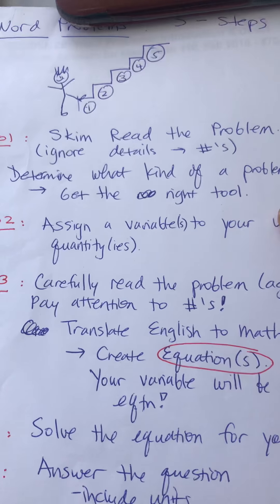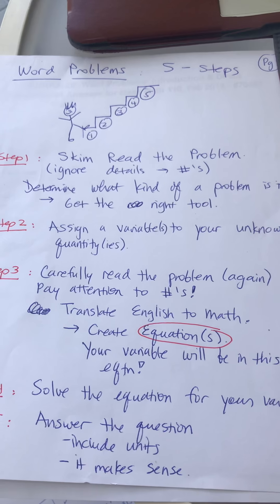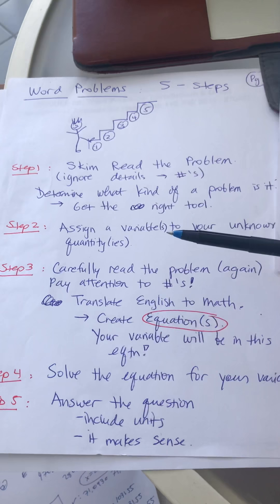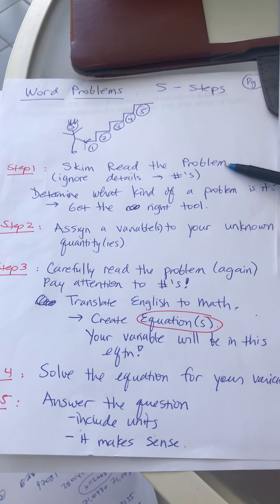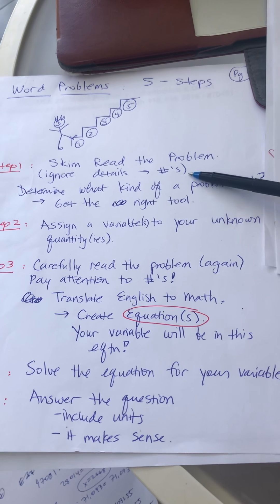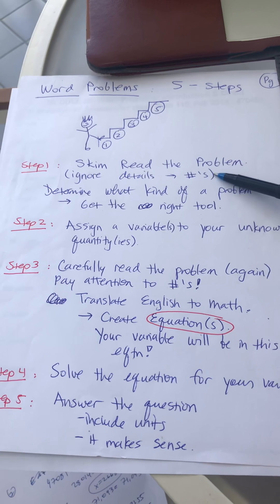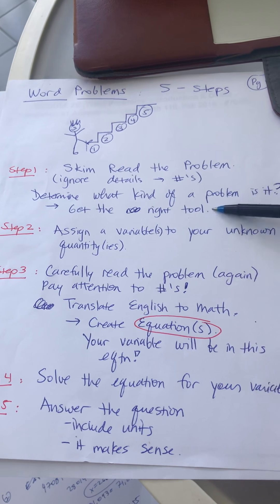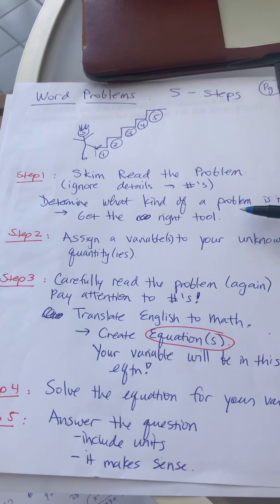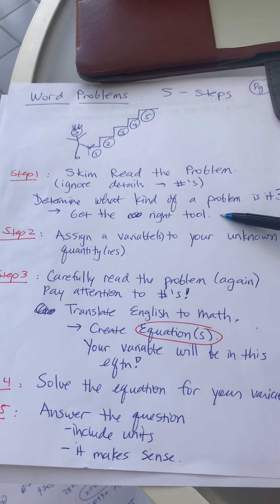So right here we left off in class on Wednesday with the five steps of solving word problems. Skim read the problem, and when you skim read, ignore the details, meaning ignore the numbers. All you want to look at is to determine what kind of a problem it is and get the right tool to solve these problems.